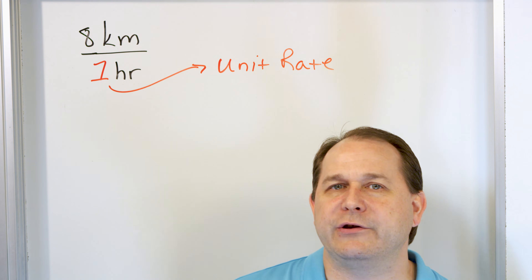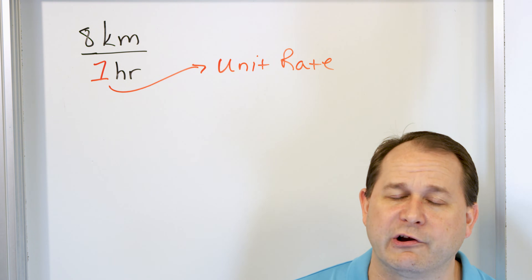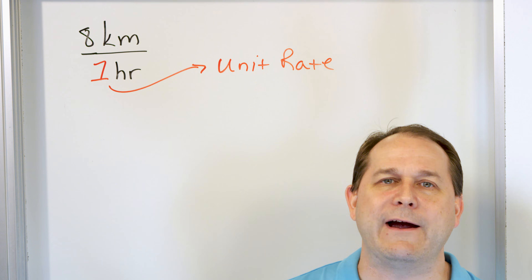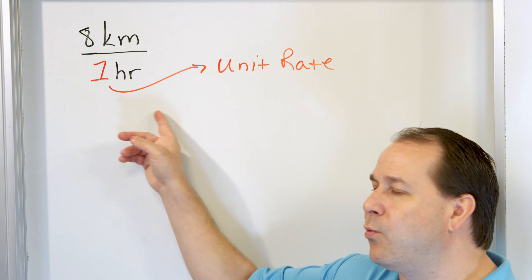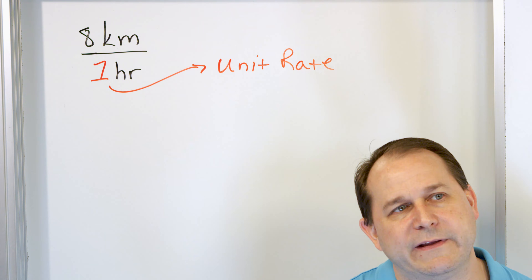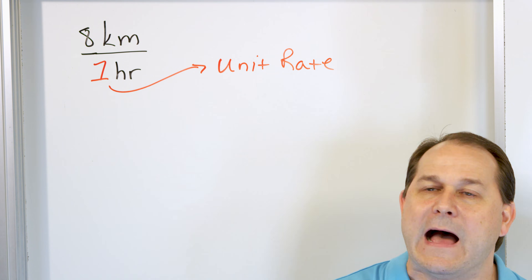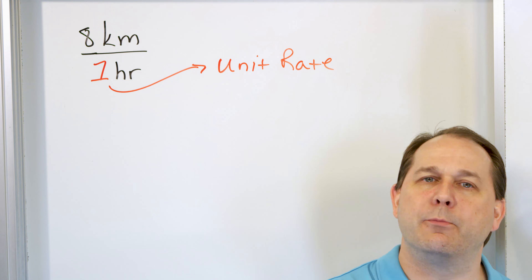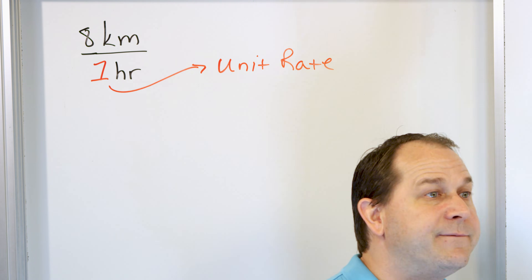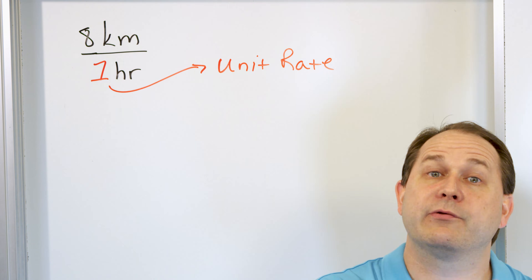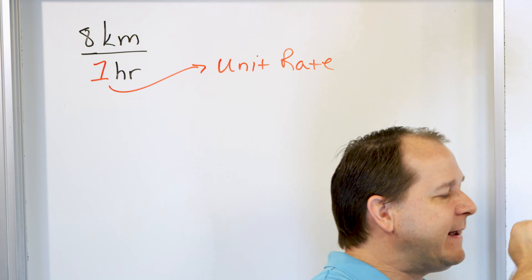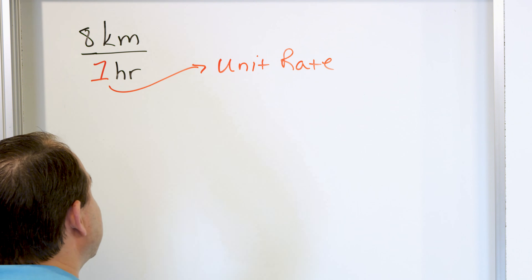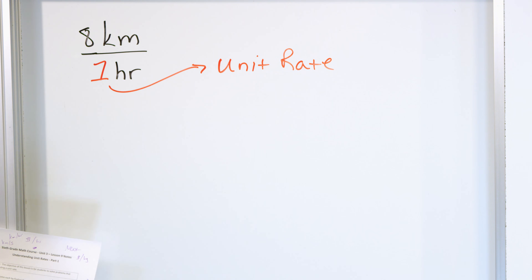We care about unit rates because it lets us predict the future. If I know that I'm going eight kilometers per every one hour, then I know that if two hours go by, I must double to 16 kilometers. If I triple the time, then I triple the distance. So every hour that goes by, that's what's happening. Let's take a look at a couple of additional examples.